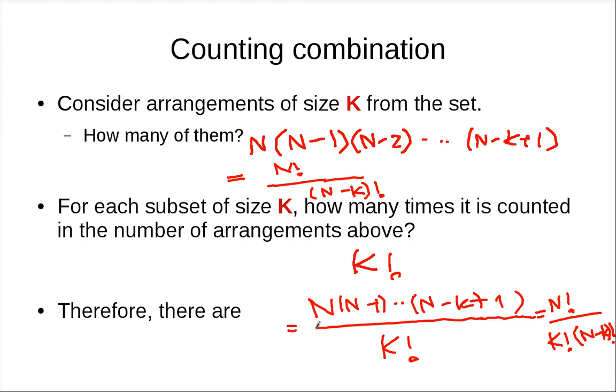And this number is really important in such a way that it has a symbol of its own. So it's N choose K. We call this N choose K, or C(N, K).